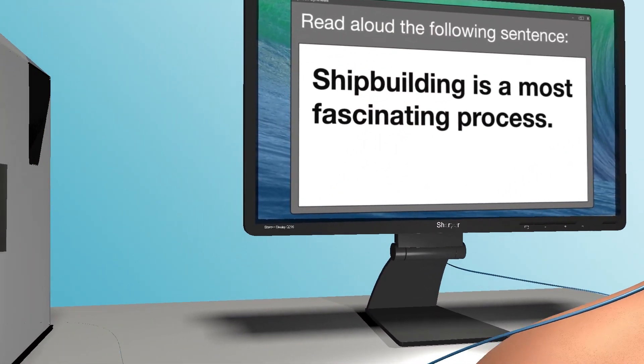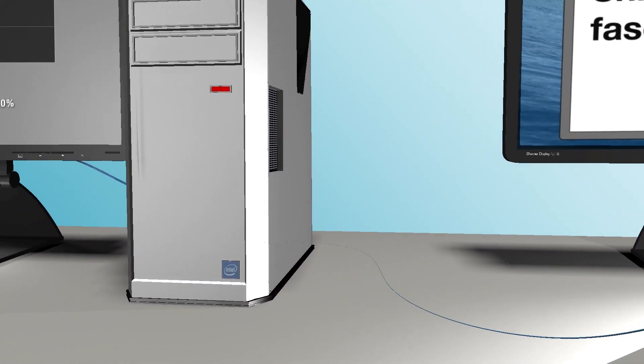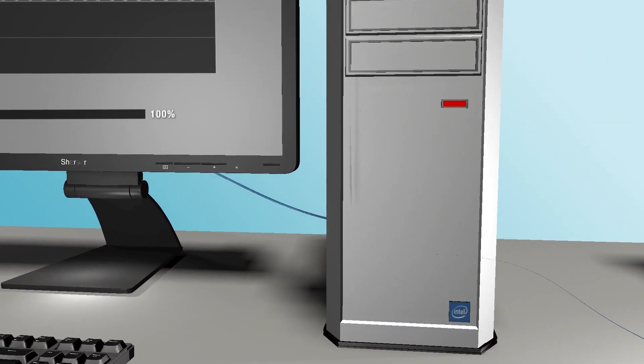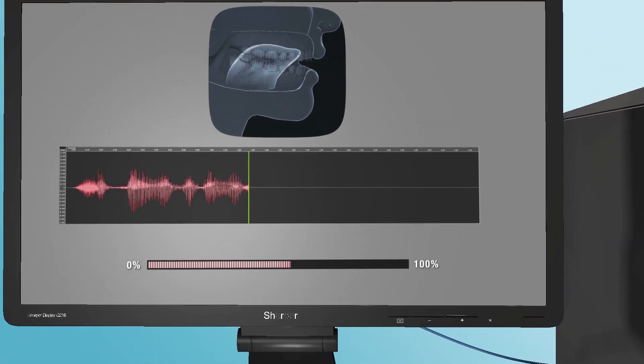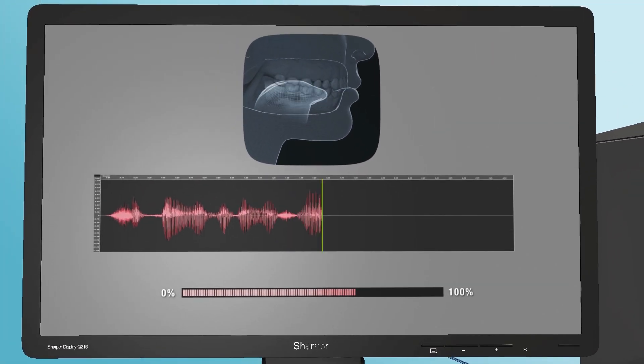A computational model based on that data enabled the researchers to decode how activity patterns in the brain's speech centers contribute to particular movements of the vocal tract. These simulated vocal tract movements were transformed into sounds to generate intelligible synthesized speech.